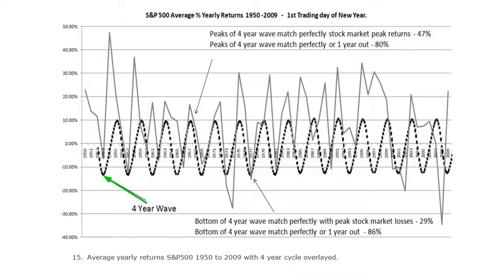What is fascinating about this chart are the four-year cycle peaks. 47% of the time, the four-year cycle predicted peak market returns accurately for that exact year. The wave peak was also accurate or one year out 80% of the time. And in 93% of the cases of the wave peaking, the S&P made positive returns.